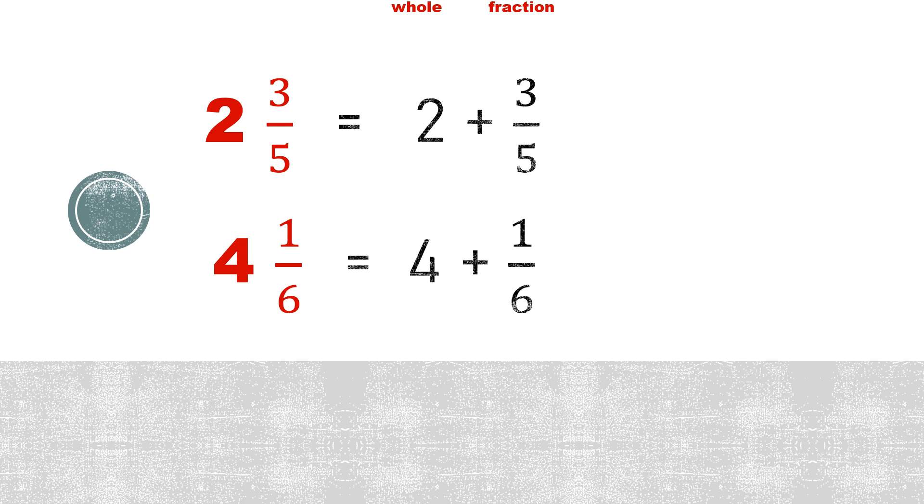I will start by explaining what is a mixed number. A mixed number is a whole number and a fraction. For example, 2 and 3 over 5 is 2 plus 3 over 5, where 2 is the whole number and 3 over 5 is the fraction.